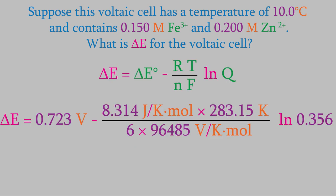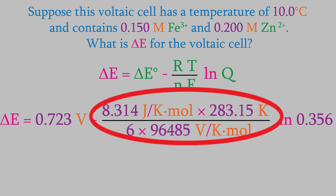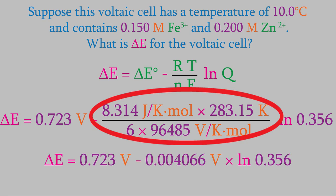We'll plug that into the Nernst equation, and now we're ready to solve it. The large fraction in the middle is equal to 0.004066 volts.